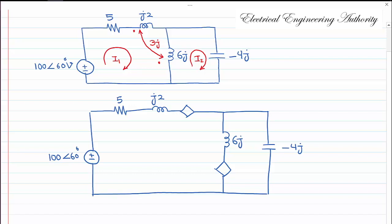Here we have current I1 and here I have current I2. We have to look at the dots near each inductor. For this dependent source, it is due to the current passing through the J2 impedance. The current is entering the dot, so at the other inductor at the dot we are going to have positive and then negative.